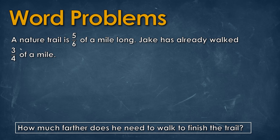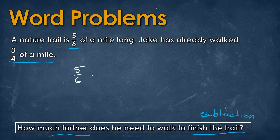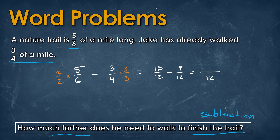For the final problem, a nature trail is 5 over 6 of a mile long and Jake has already walked 3 over 4 of a mile. How much further does he need to walk to finish the trail? This is subtraction: 5 over 6 minus 3 over 4. The least common denominator is 12, so we multiply the first fraction by 2 on top and bottom and the second by 3 on top and bottom. This gives us 10 over 12 minus 9 over 12. Keeping the denominator of 12 and subtracting the numerators: 10 minus 9 equals 1, so he has 1 over 12 miles left to walk.